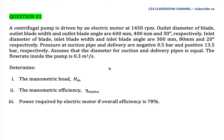The inlet diameter of blade, inlet blade width, and inlet blade angle are 300 millimeters, 80 millimeters, and 20 degrees respectively. Pressure at suction pipe and delivery are negative 0.5 bar and positive 13.5 bar respectively. Assume that the diameter for suction and delivery pipes is equal. The flow rate inside the pipe is 0.3 cubic meters per second.